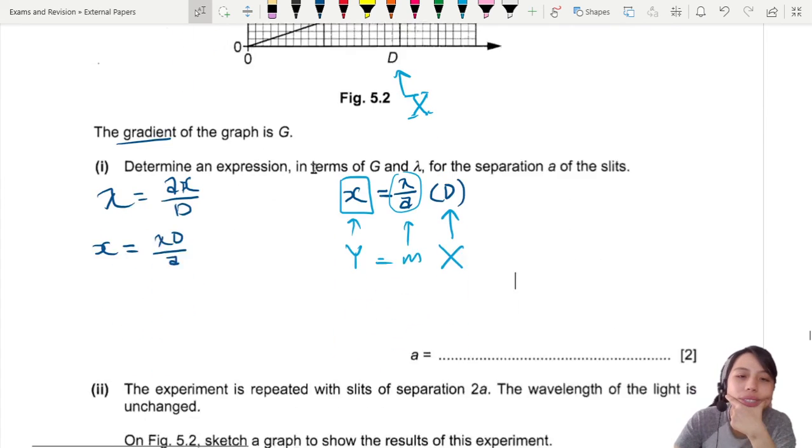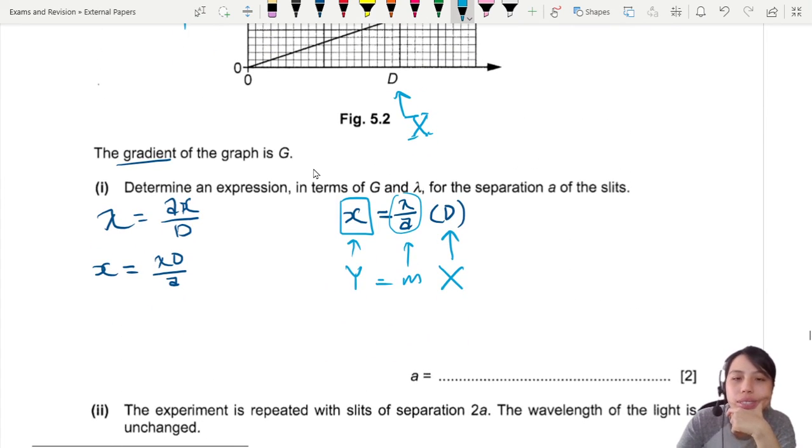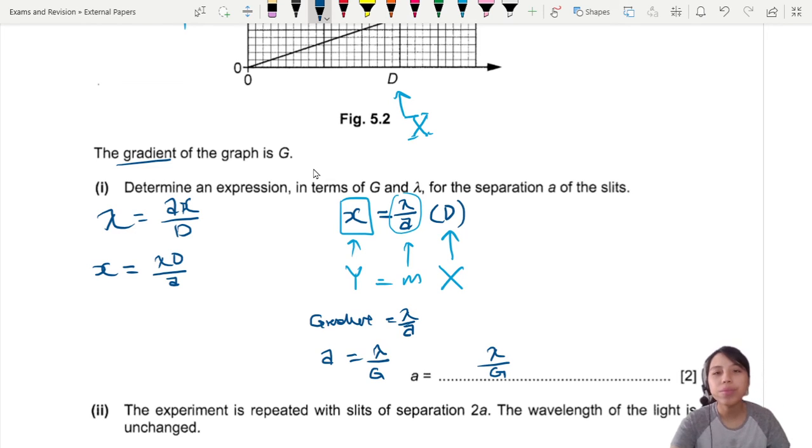You want to find the separation for the slits. Check the gradient: gradient equals lambda over a, so a equals lambda over gradient. Write lambda over G. This is one mark, the other mark probably using lambda equals ax over d.